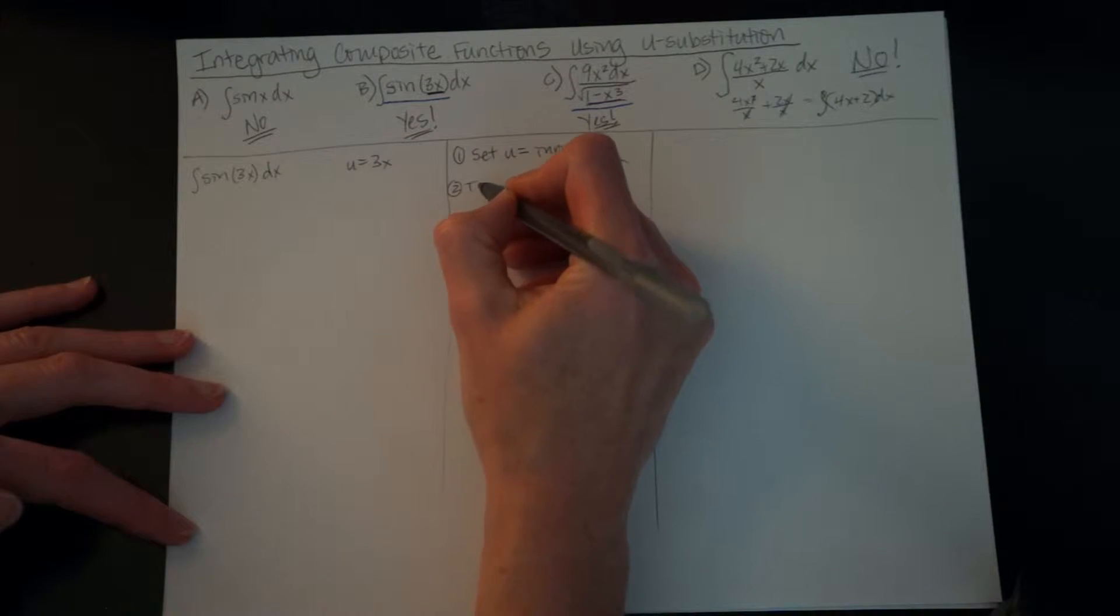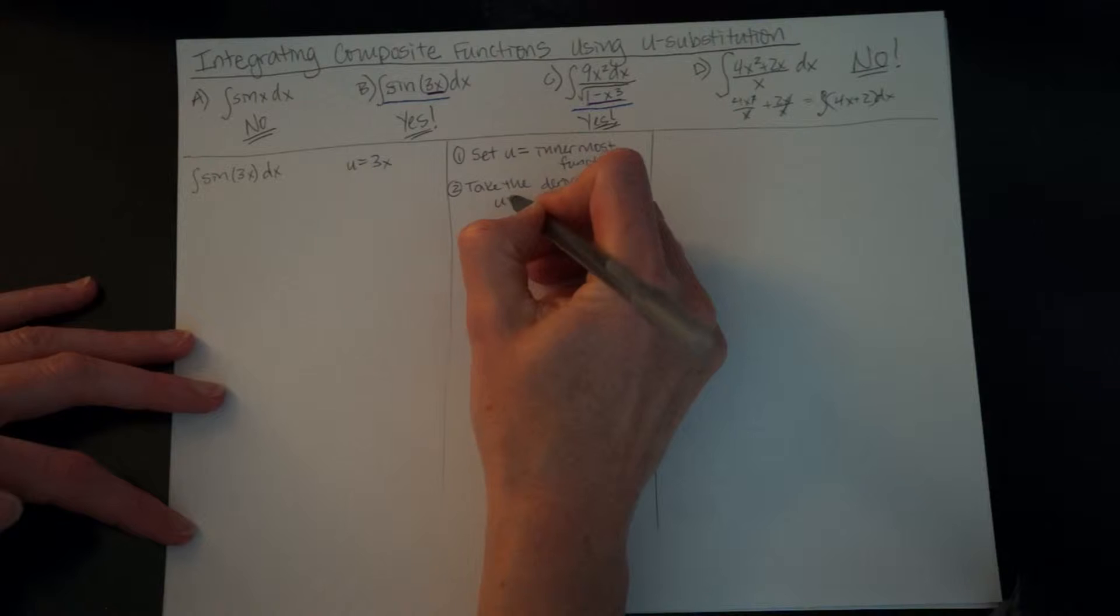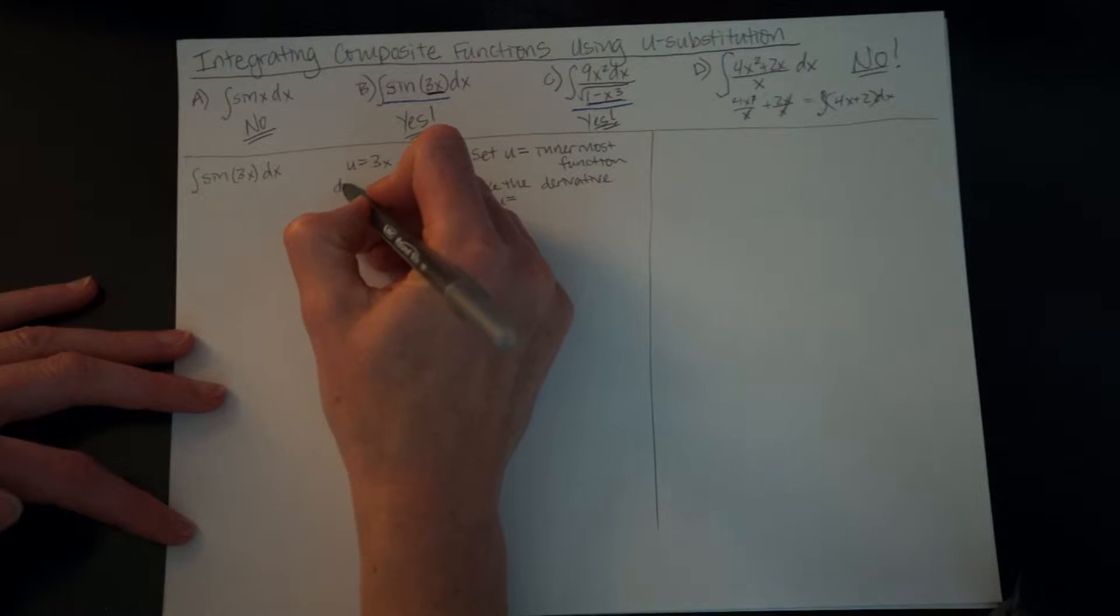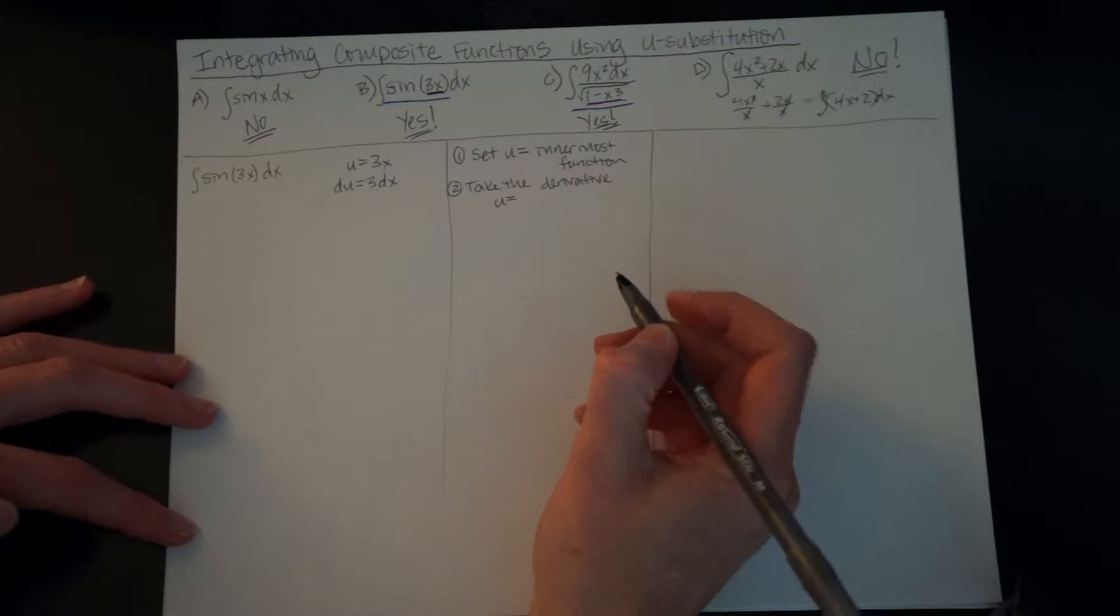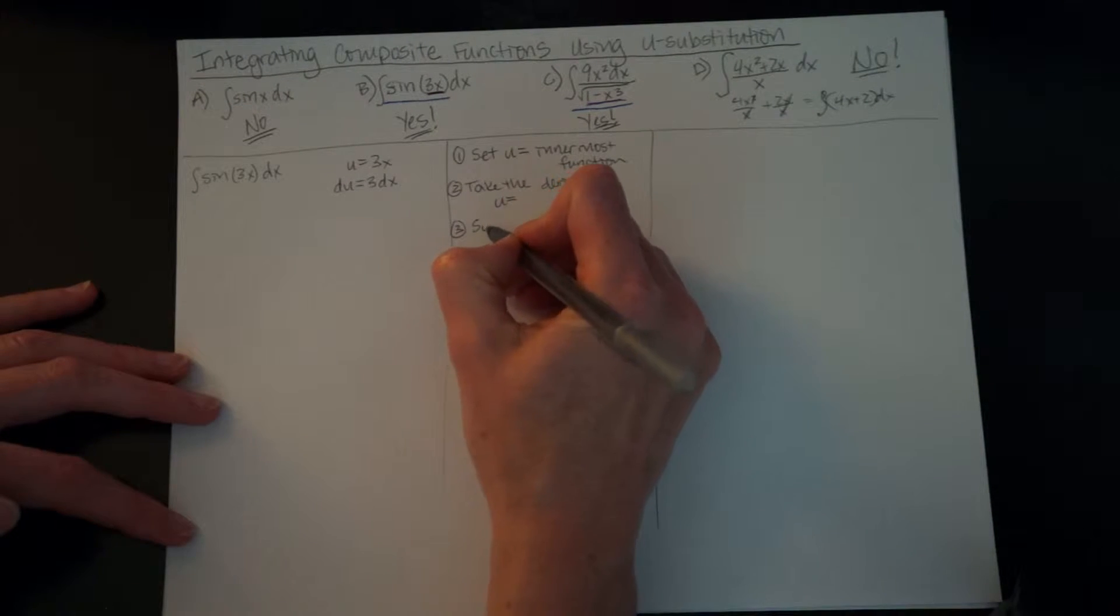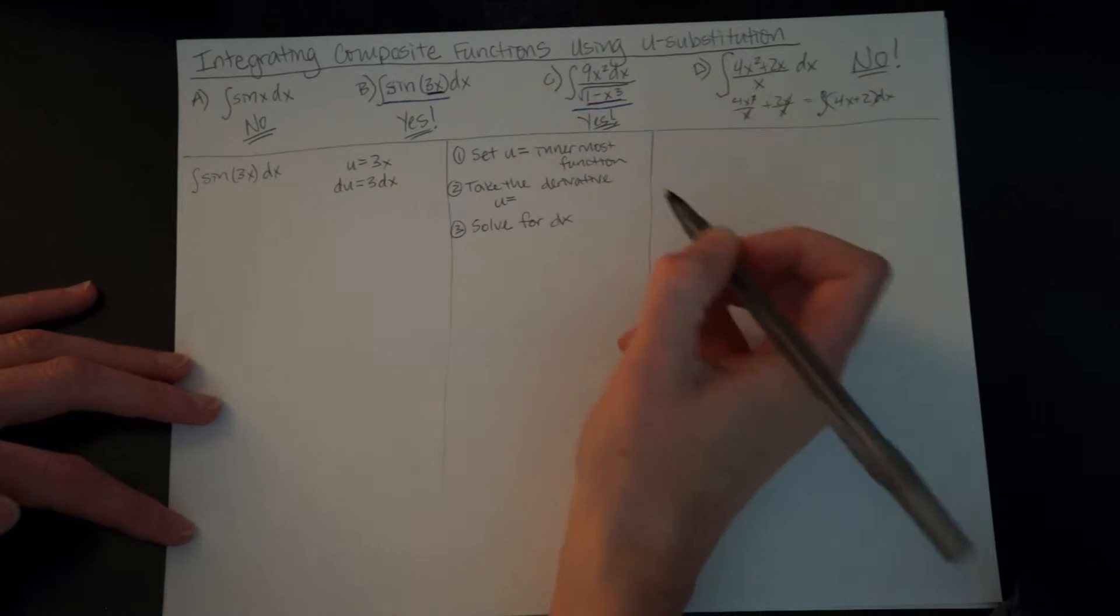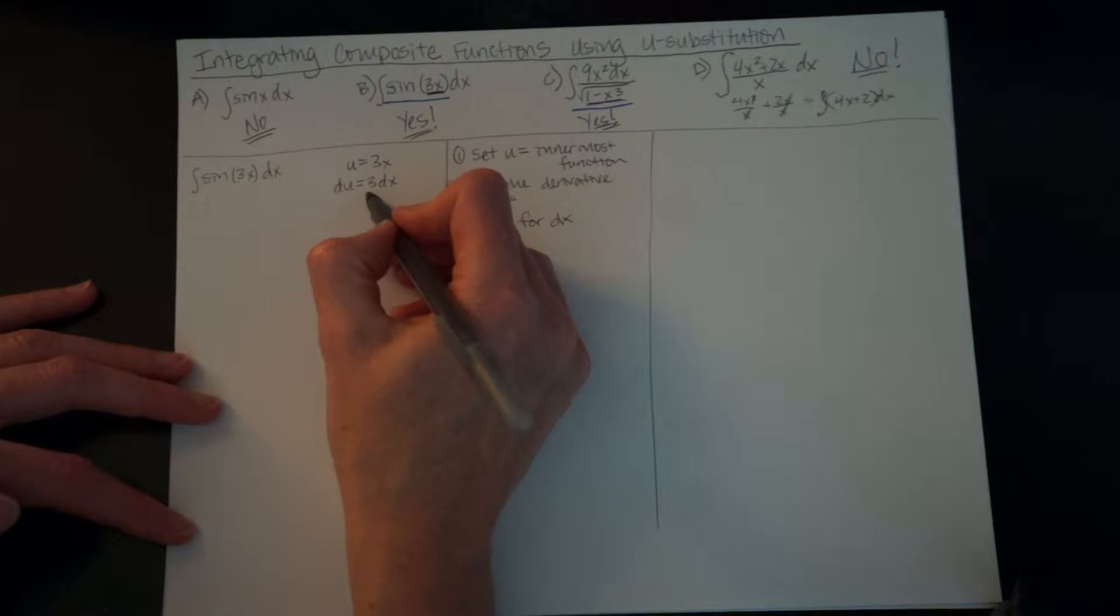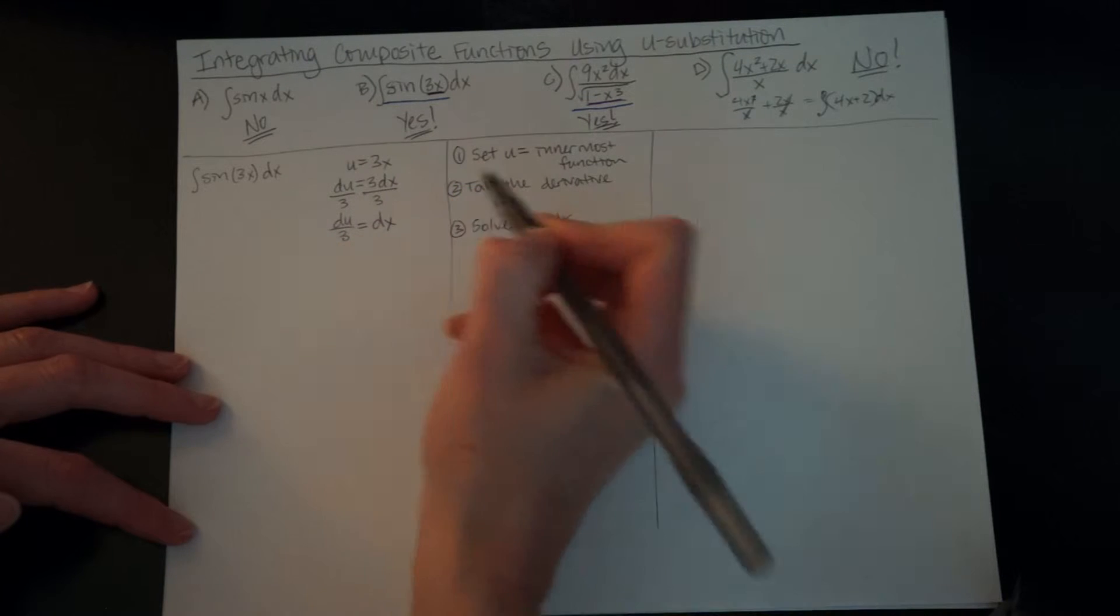Now the next step is take the derivative. So we're going to take the derivative of what we have just set u equal to. So that's going to be du equals 3 dx. Okay, so follow along with me there. We did that. And now we're going to solve for dx. So all of our first two steps are just using this here. Divide both sides by three. So du over three is equal to our dx.